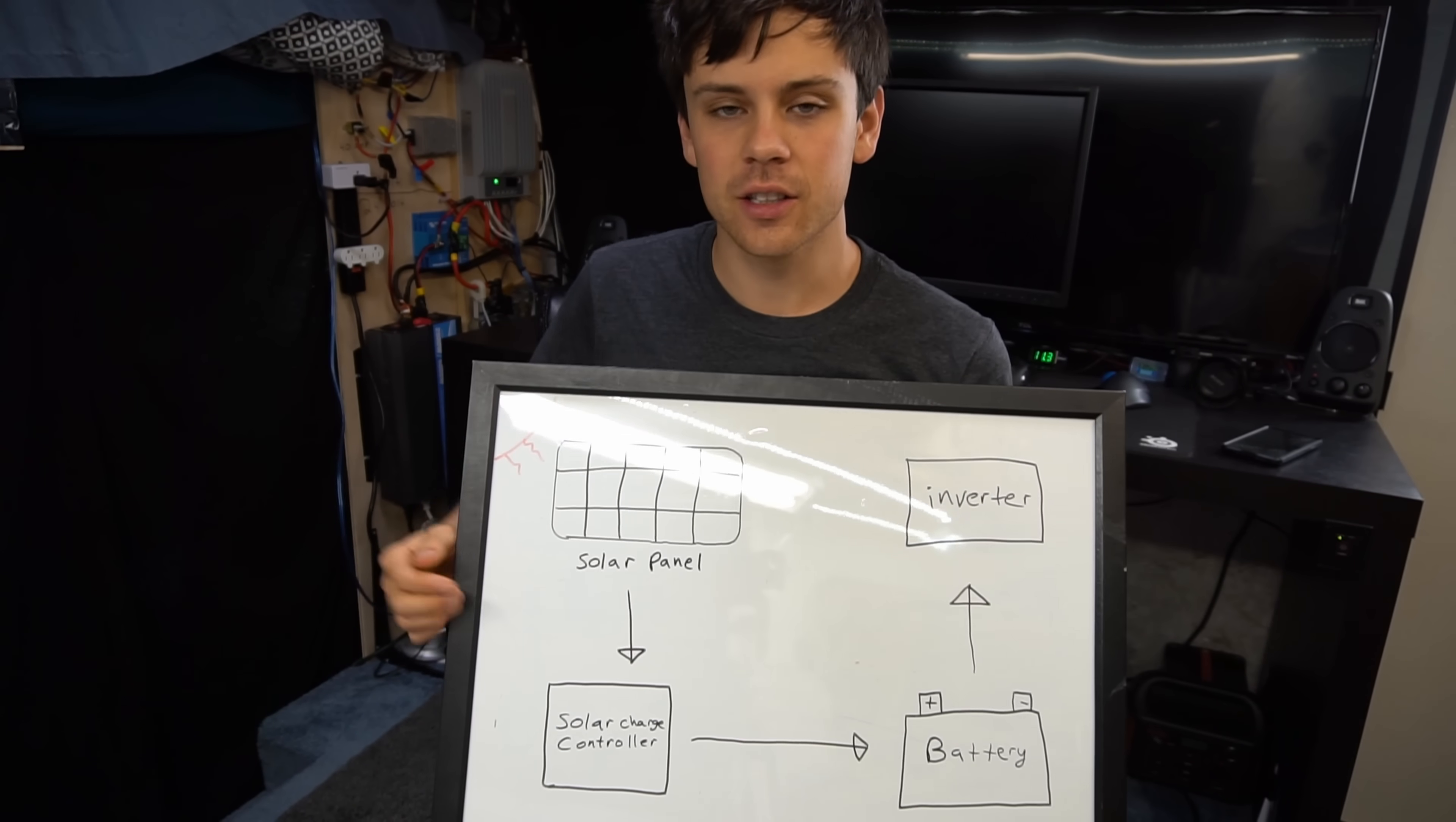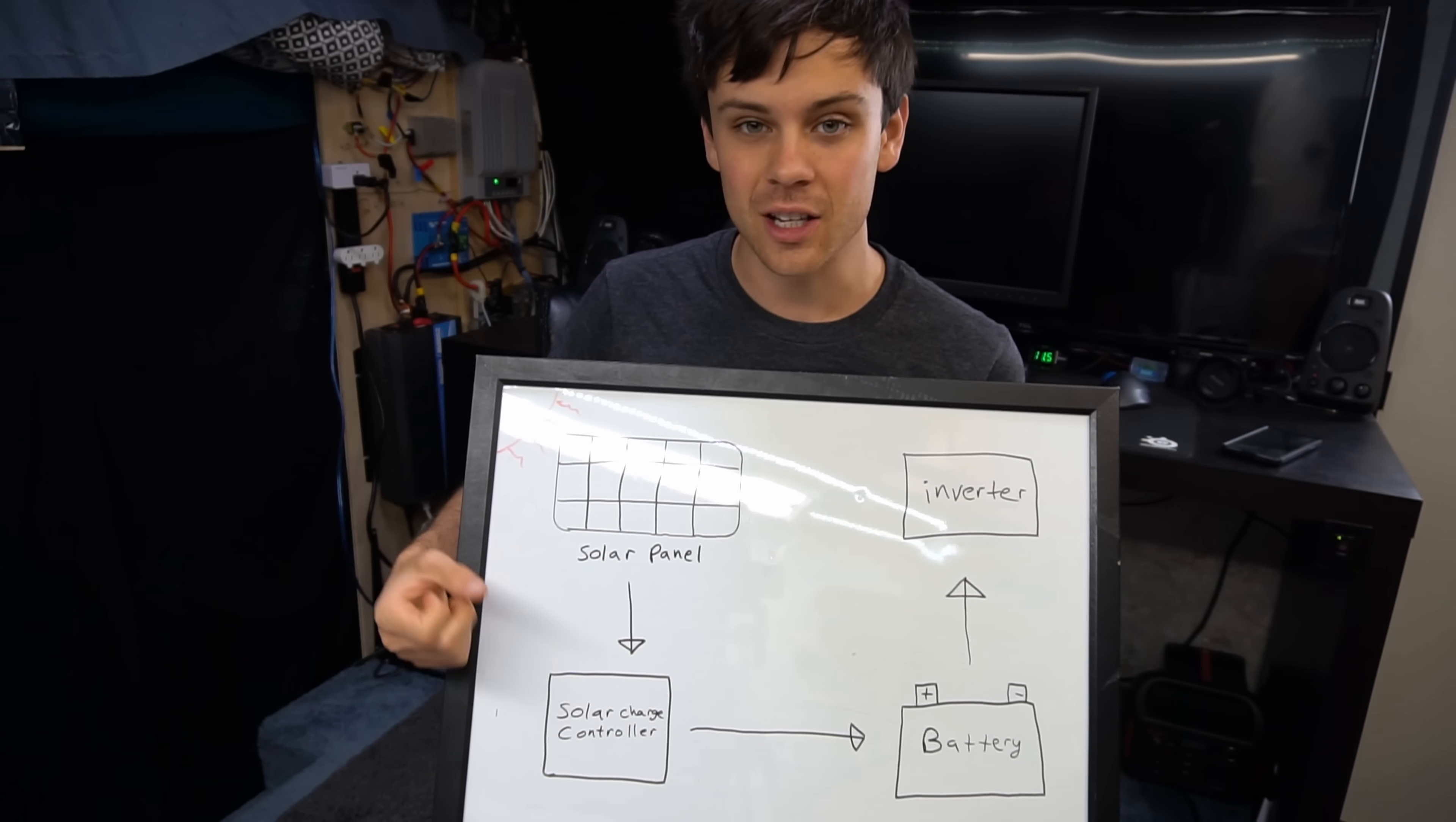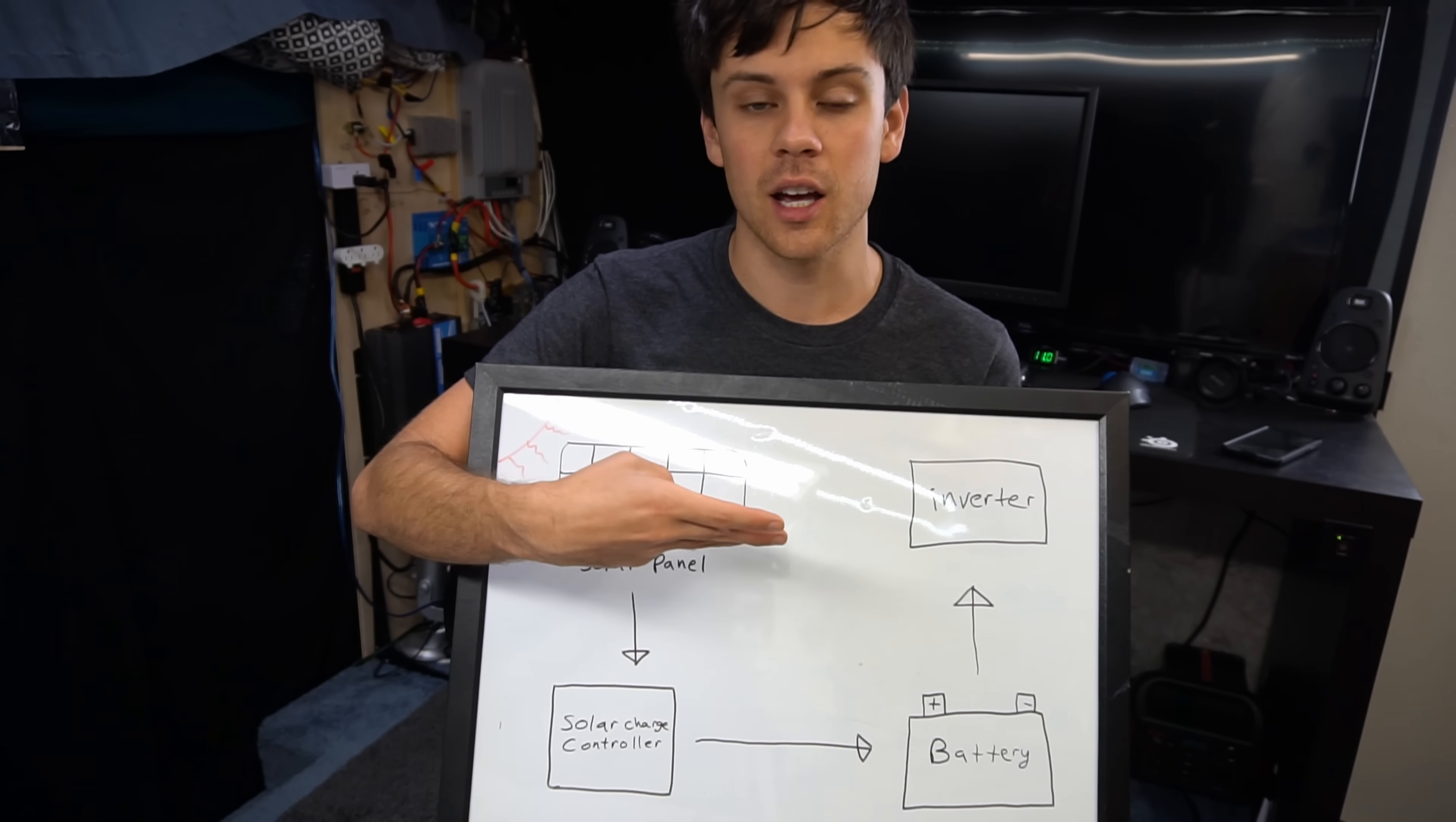Today's video we're going to be learning how to design a solar power system for maximum efficiency and we're going to calculate all of the potential losses from buying cheap components, from having bad wire gauge, and using induction loads on a modified sine wave inverter.